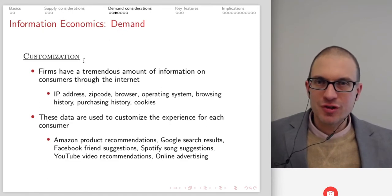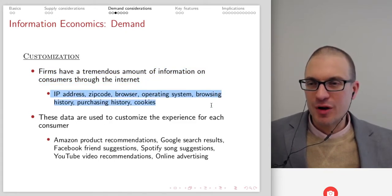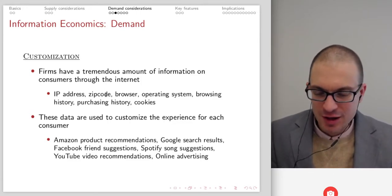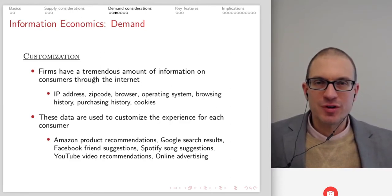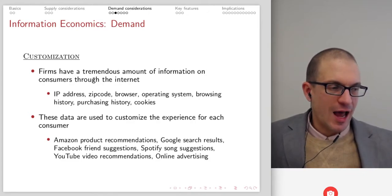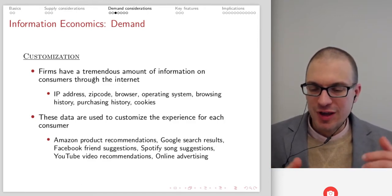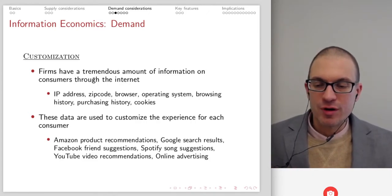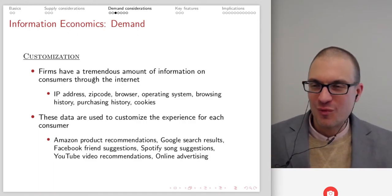In terms of other demand features, there's a tremendous scope for customization. There's a tremendous amount of information on consumers: IP address, zip code, browser operating system, browsing history, purchasing history, cookies. The idea is there's a lot of information firms are able to get, and therefore they're able to target how the information is presented on a particular screen.